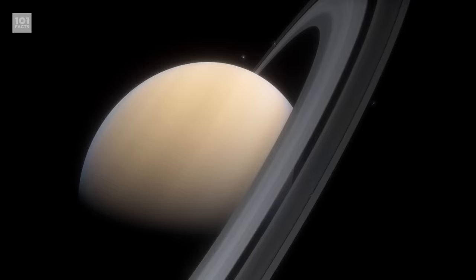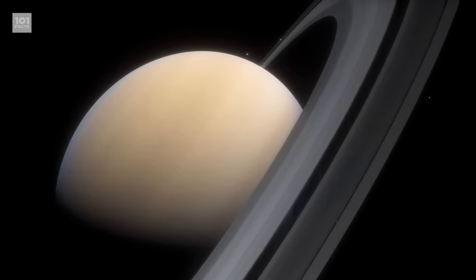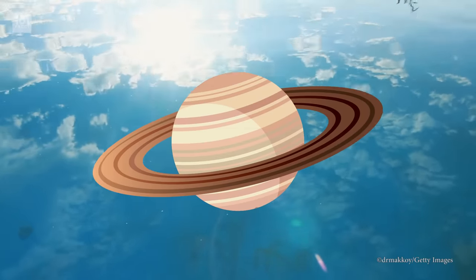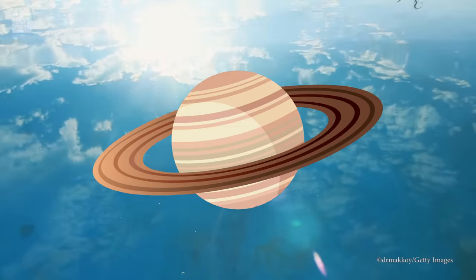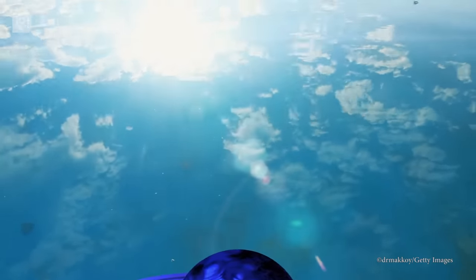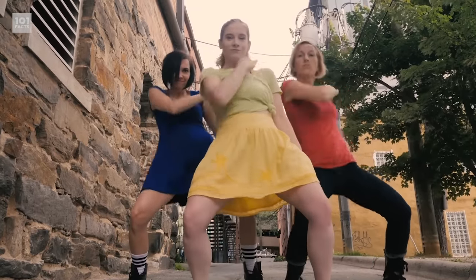There is a myth that because of its small density, if you put Saturn in a massive planet-sized bath, it would float as water has a higher density. While that is technically true, it doesn't take into account the outer atmospheric layers that would just dissolve, and then the inner denser parts would sink.